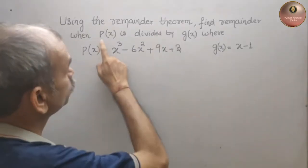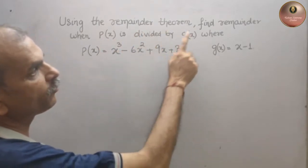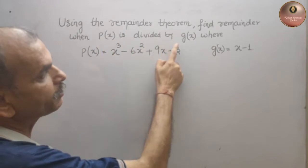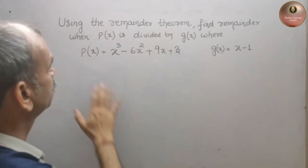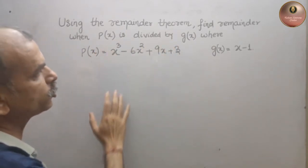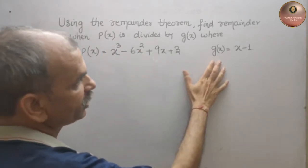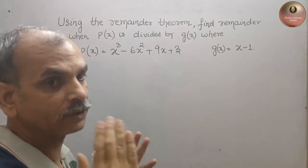Your question is using the remainder theorem, find remainder when p(x) is divided by g(x) where p(x) is equal to x³ - 6x² + 9x + 3, g(x) is equal to x - 1.